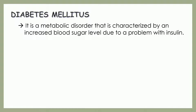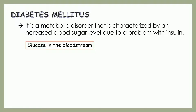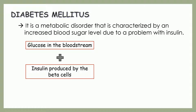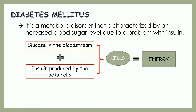What is diabetes mellitus? It is a metabolic disorder that is characterized by an increased blood sugar level due to a problem with insulin. Normally, when we eat a carbohydrate, our body will convert it in the form of sugar called glucose, then it will go into the bloodstream. Since it cannot go alone into the cells, the pancreas, specifically the beta cells, will release insulin. Insulin is a hormone that will facilitate the glucose from your bloodstream to go inside your cells so that it can now be used for energy. That is the normal flow of glucose and insulin inside your body.